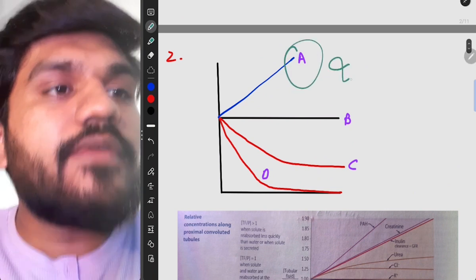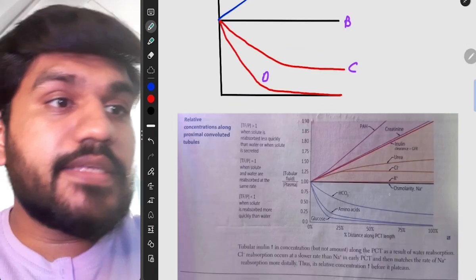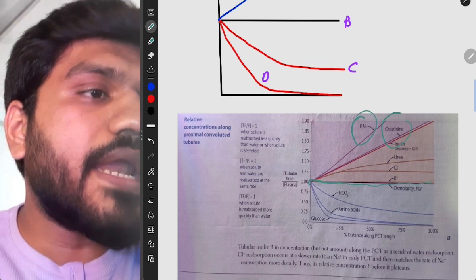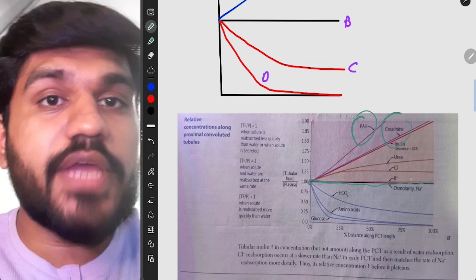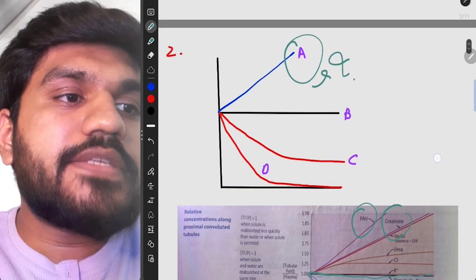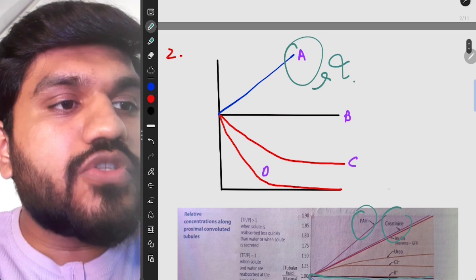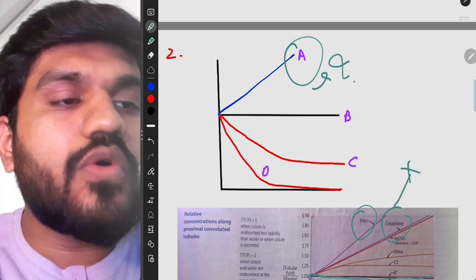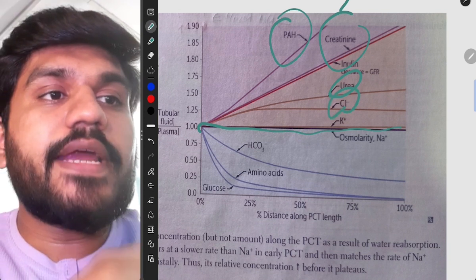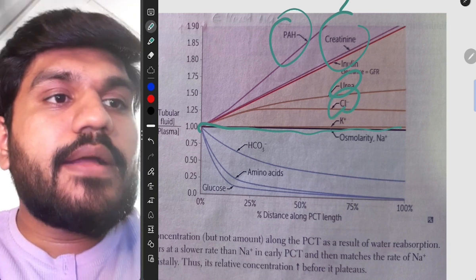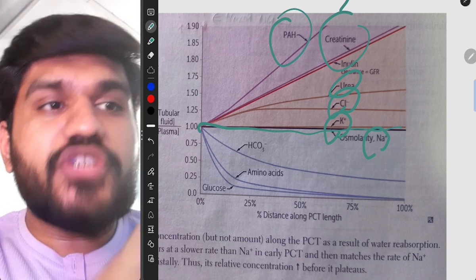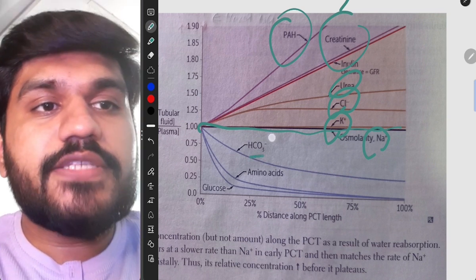While our kidney does the secretion, it will secrete some substance and it will reabsorb some substance. So this graph is basically showing that. And in the exam they asked what is A. And in this graph you can see there are two things that are above this line. So this is our no secretion and no absorption line. So PAH is above the line and creatinine is also above the line, but there was no option for creatinine. There was only option for PAH.